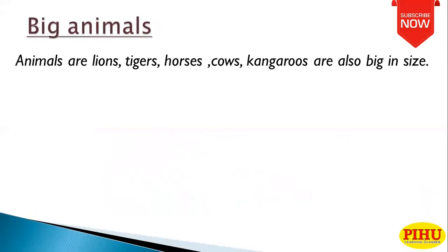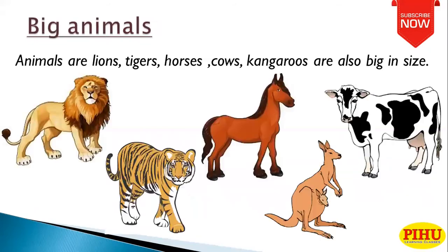Big animals: animals like lion, tigers, horses, cows, and kangaroos are also big in size. These all animals are big.